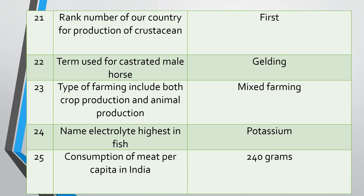Question twenty-two: Term used for a castrated male horse. Question twenty-three: Type of farming which includes both crop production and animal production.